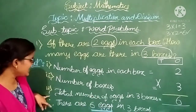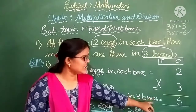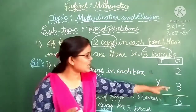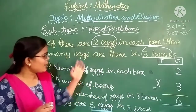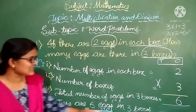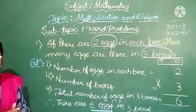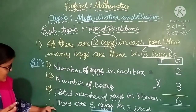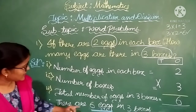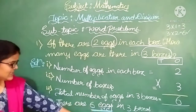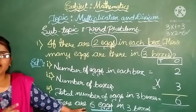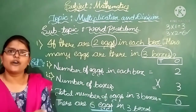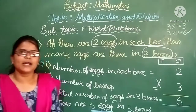Third point: total number of eggs in 3 boxes. In 1 box there are 2 eggs, so in 3 boxes there will be 6 eggs. After writing these 3 statements, the last statement is very important. Therefore, there are 6 eggs in 3 boxes. If you write only until the calculation, you will get only half marks. If you write the full statement, you will get full marks.